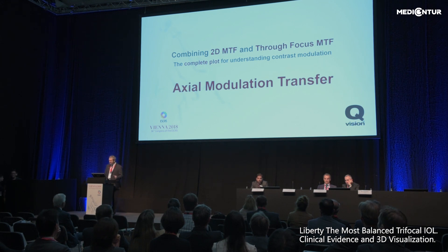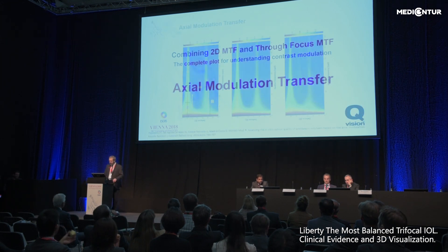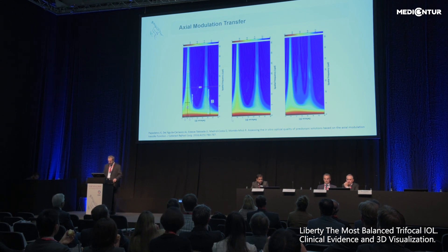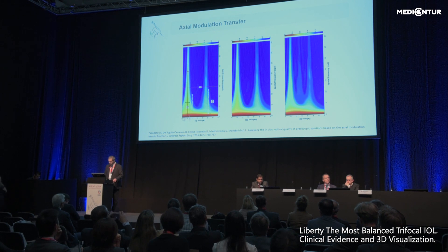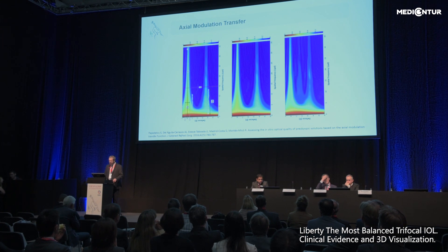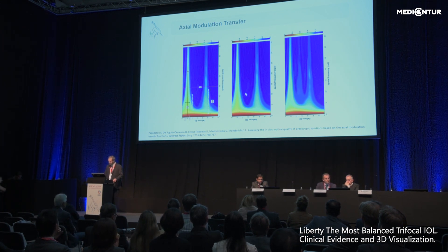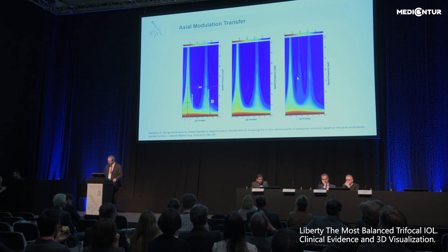This is called the axial modulation transfer. From a paper published in 2016, the concept of axial modulation transfer has defocus on one axis, spatial frequency on the other, and the color intensity tells us the MTF of each lens. For example, a bifocal lens shows two foci, and we can compare it with a trifocal lens that has this additional focus for intermediate vision.